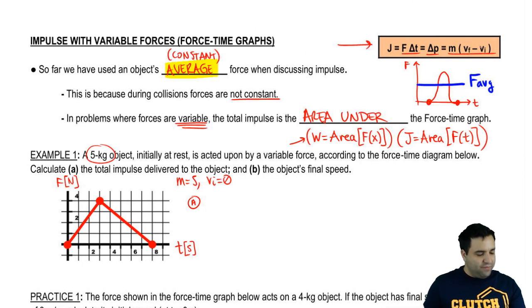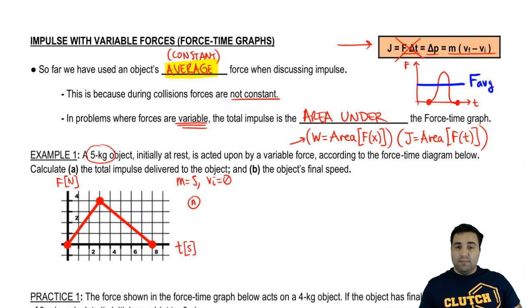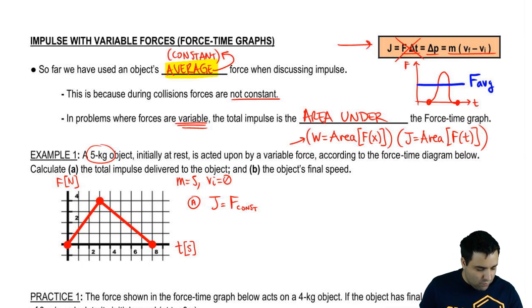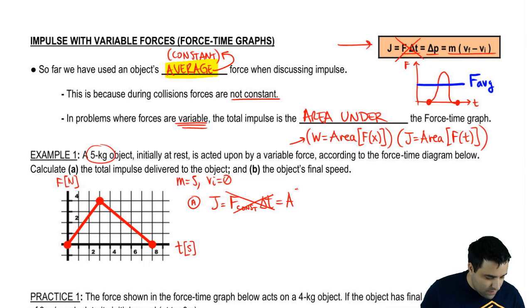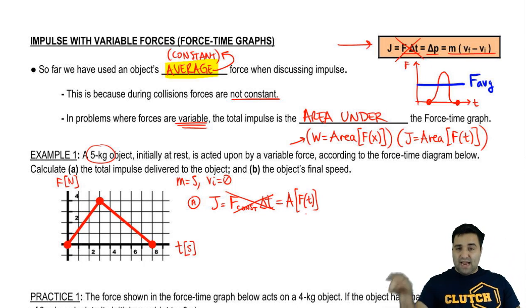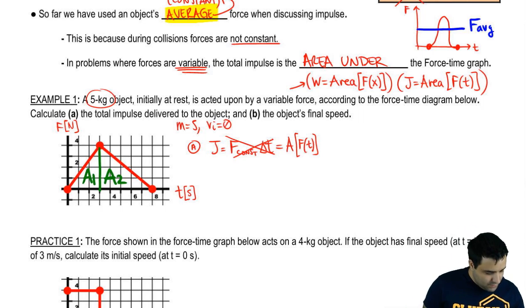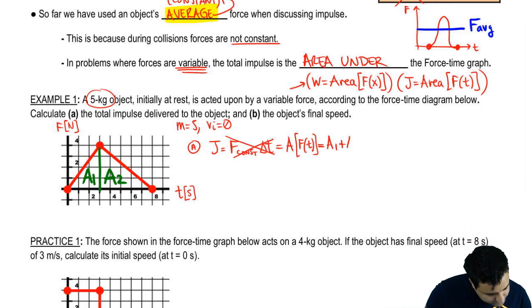So let's calculate the total impulse delivered to the object. Total impulse is given by this equation here. We can use any one of these forms, but if you look around, we don't have enough information to use the average force form — that only works for an average or constant force. So a more generic way is: impulse equals the area of the F-t graph. Since the graph goes up and then down, we have to segment it into two areas — area one and area two.